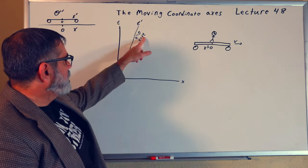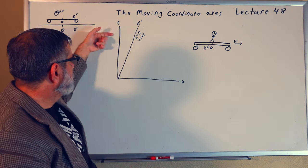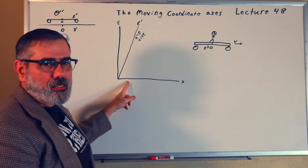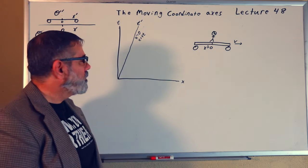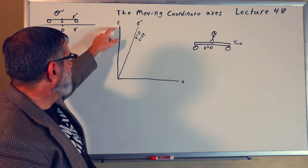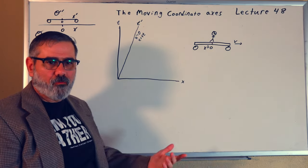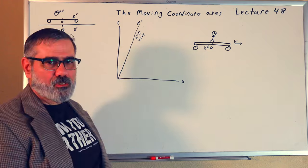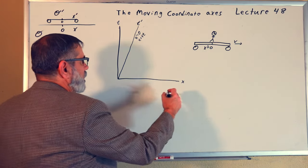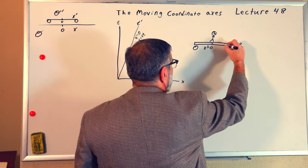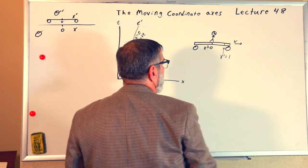So now I want to consider this guy located at x prime equals one. He too has a clock. I'm going to assume that all of the clocks on the train are synchronized with each other, and all of the clocks on the platform are synchronized with each other. We'll talk in a moment about how that's accomplished. So what do I draw for him? He would have a world line too.